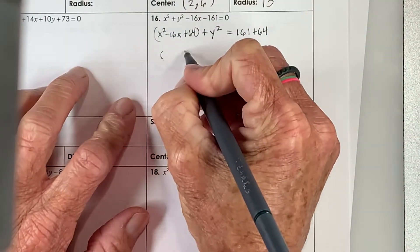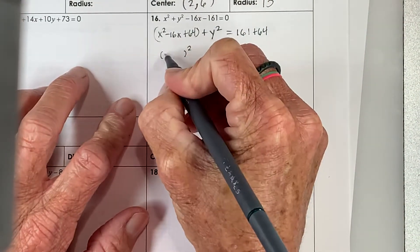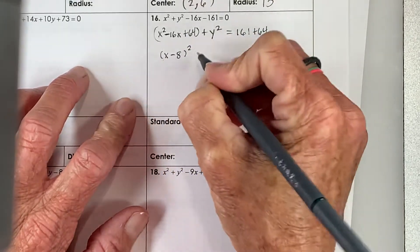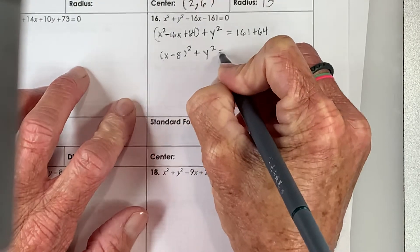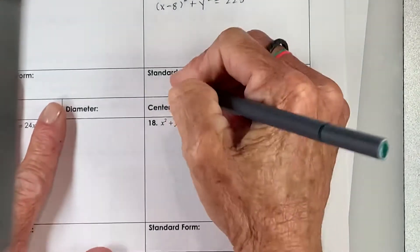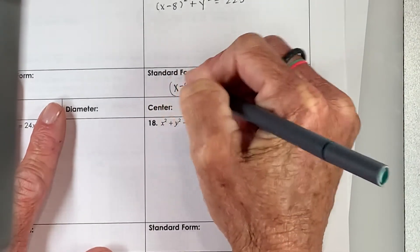This is a perfect square trinomial. The square root of x is x. The square root of 64 is 8, and because that's minus, that's a minus. All right, and when we add over here, we get 225. All right, so in standard form, that's what we wanted.